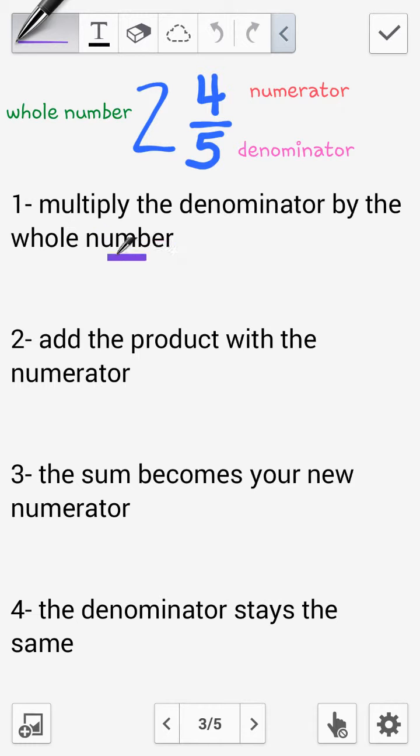Step number 1, multiply the denominator by the whole number. Here the denominator is 5, the whole number is 2, so I multiply 5 times 2. That gives us 10.